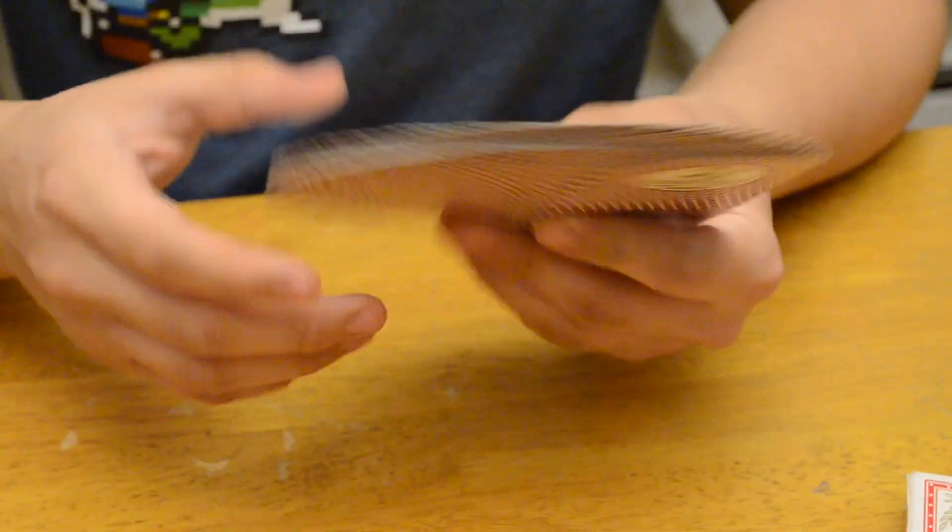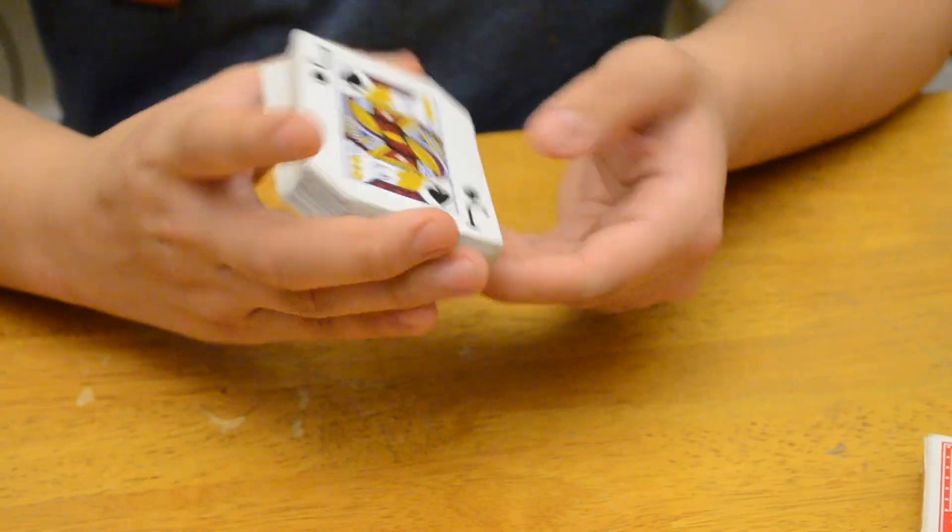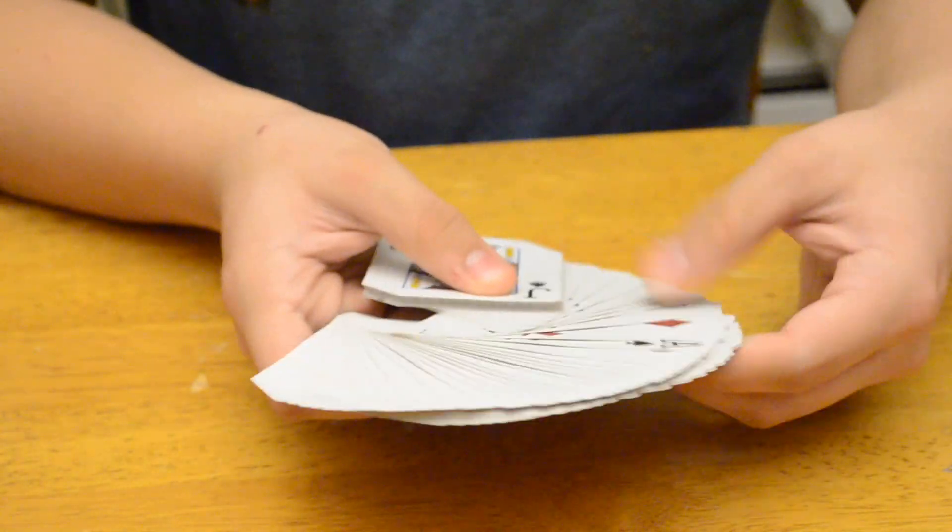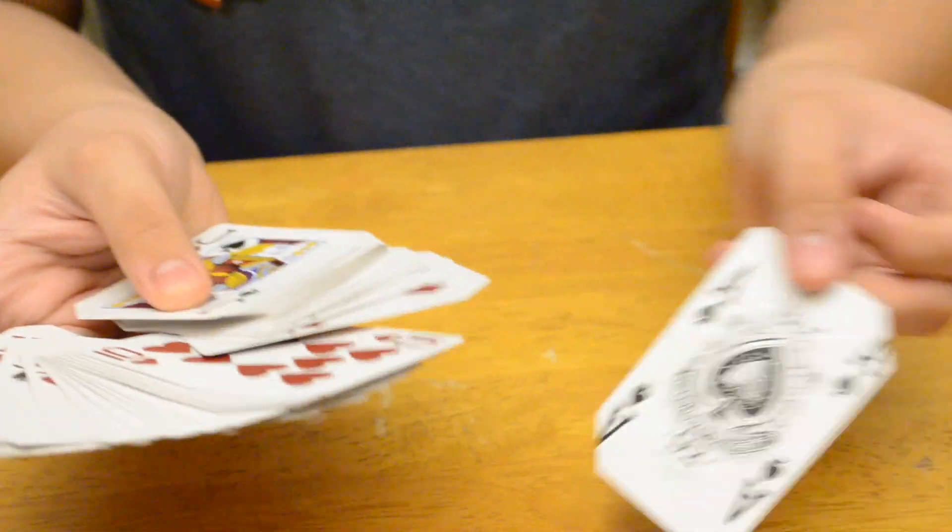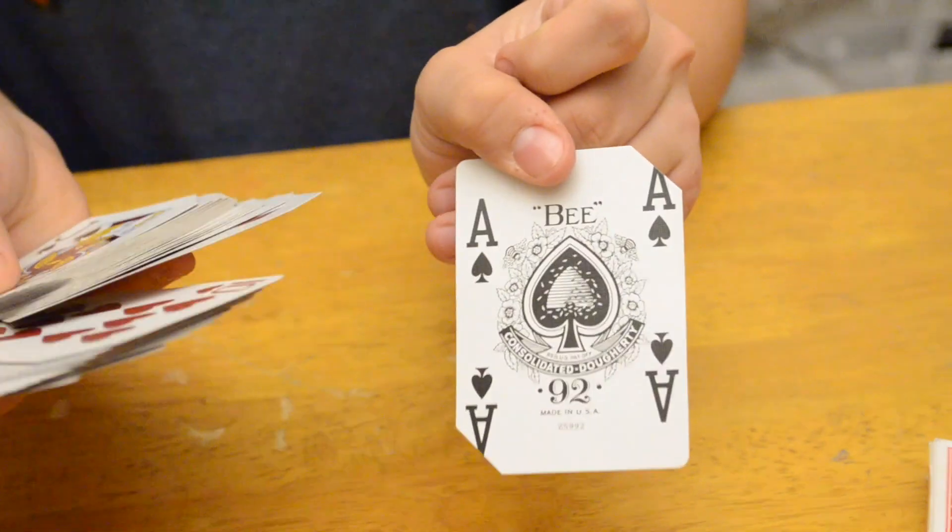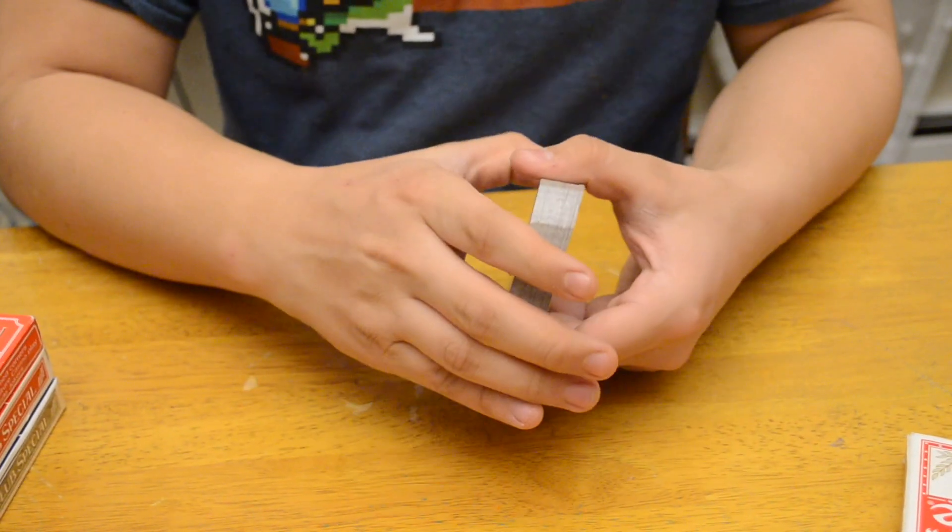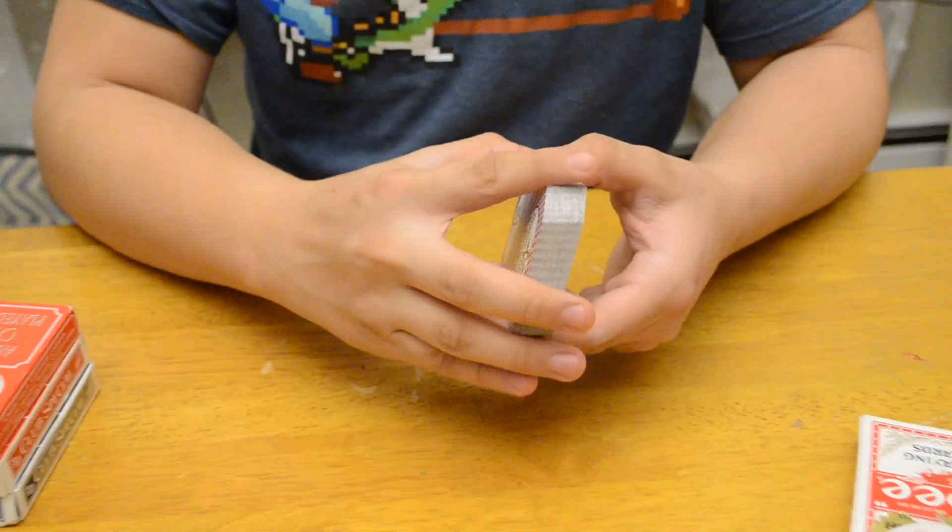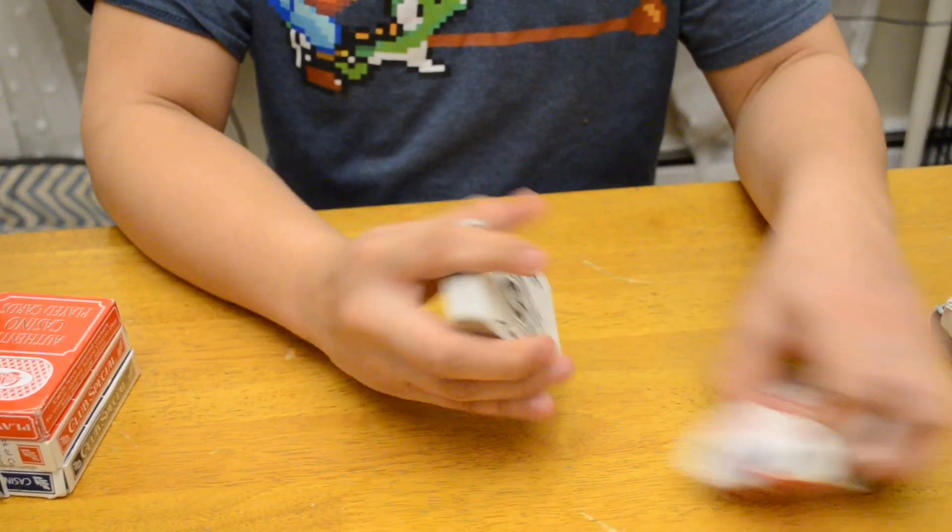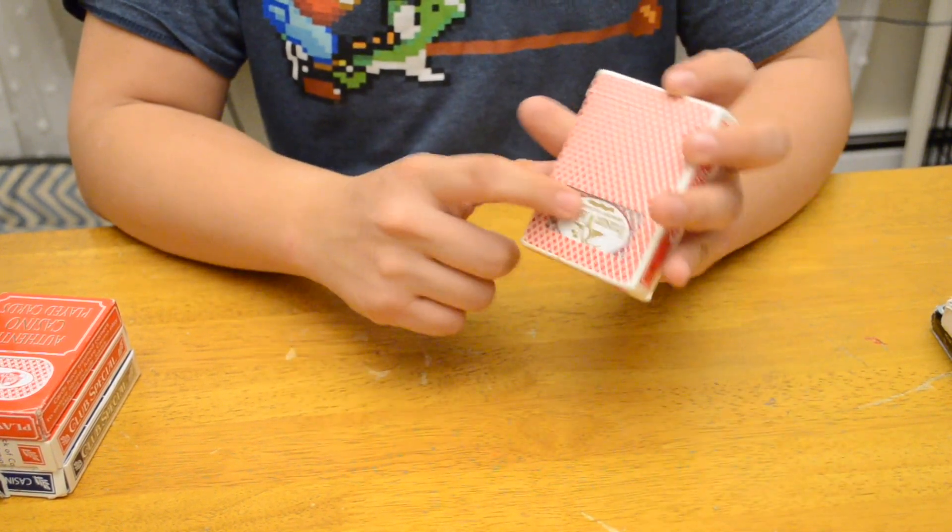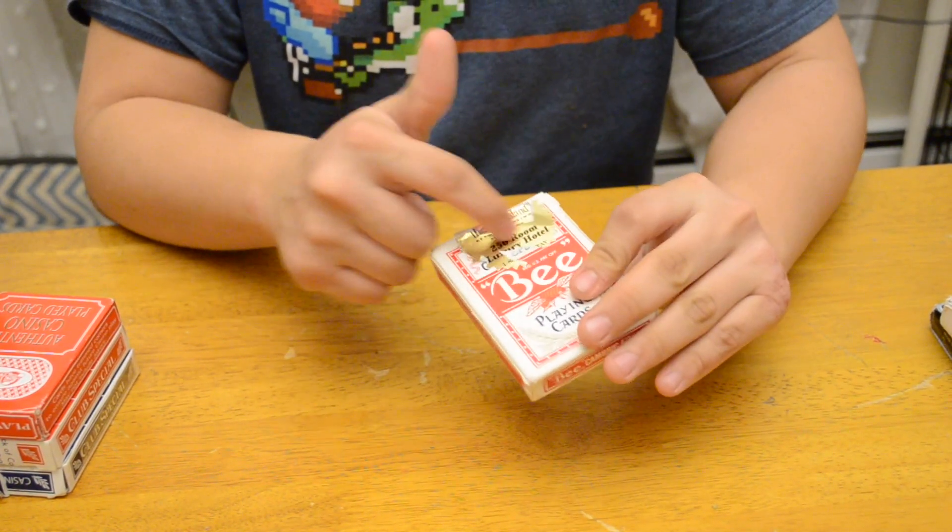Well, not exactly quite jumbo. They're like an in-between size. The Aces are on all four sides. I'll find the Ace of Spades. As you can see. They also have a little window.